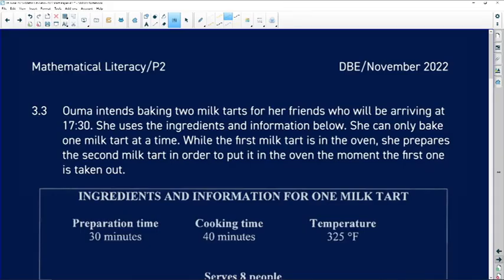3.3 says to us Ouma intends on baking two milk tarts for her friends who will be arriving at 17:30, which is half past 5 in the afternoon. She uses the ingredients and information below. She can only bake one milk tart at a time. I love all this information that's been given because we're going to be asked about it.